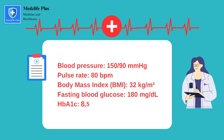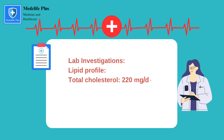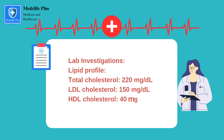Fasting blood glucose is 180. HbA1c levels are 8.5%. Lab investigations reveal total cholesterol 220 mg/dL, LDL cholesterol 150 mg/dL, HDL cholesterol 40 mg/dL, and triglycerides 180 mg/dL.